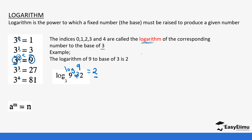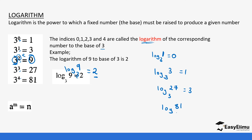Let's do the practice questions. Three to the power zero equals one becomes: logarithm of one to the base of three gives us zero. Three to the power one: logarithm of three to the base of three gives us one. Three to the power three: logarithm of 27 to the base of three gives us three. And three to the power four: logarithm of 81 to the base of three gives us four.